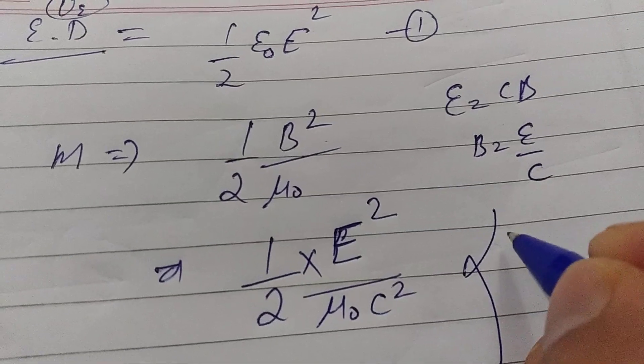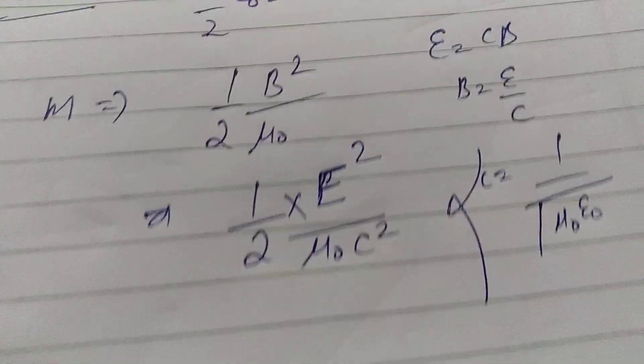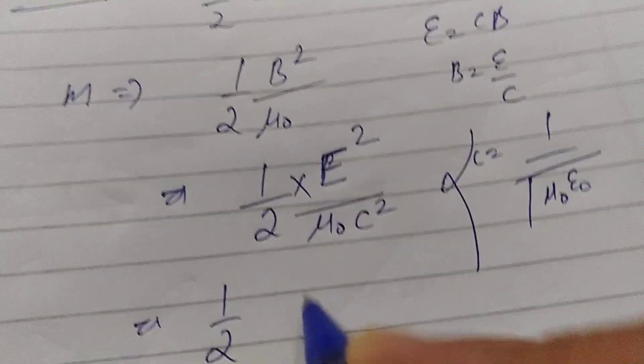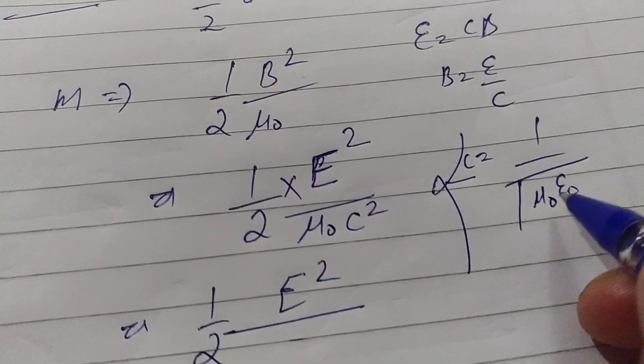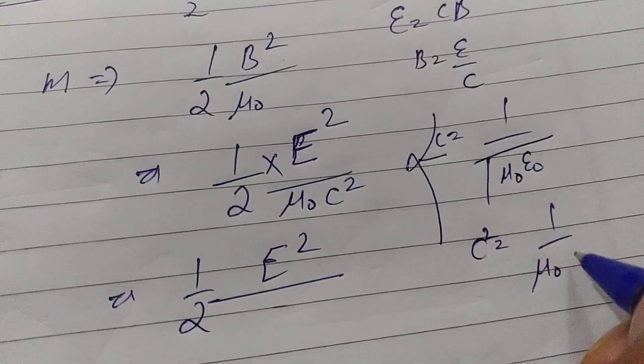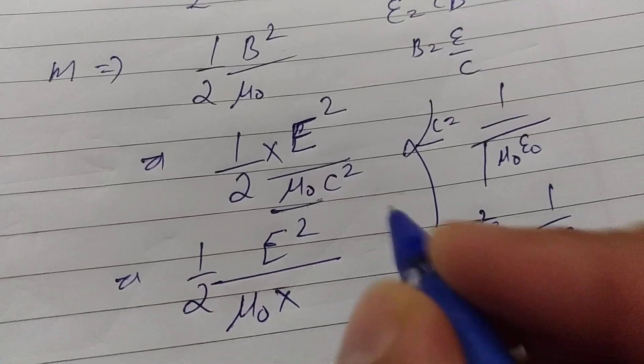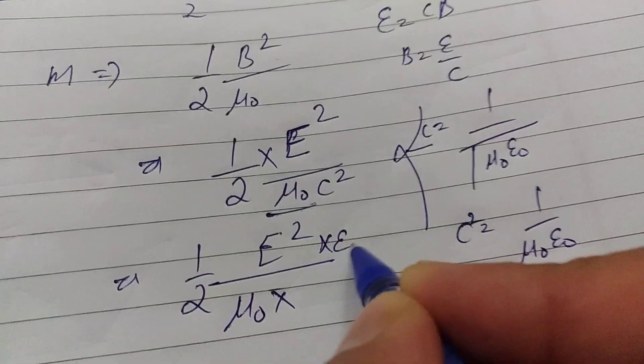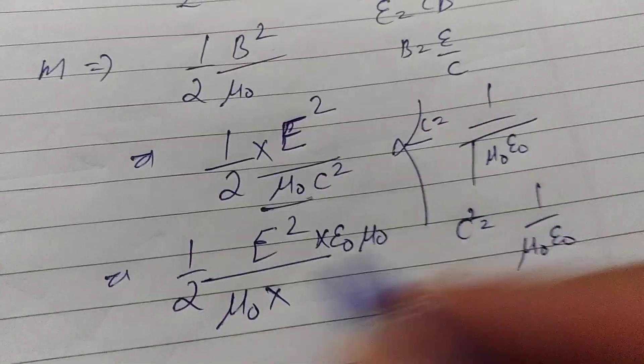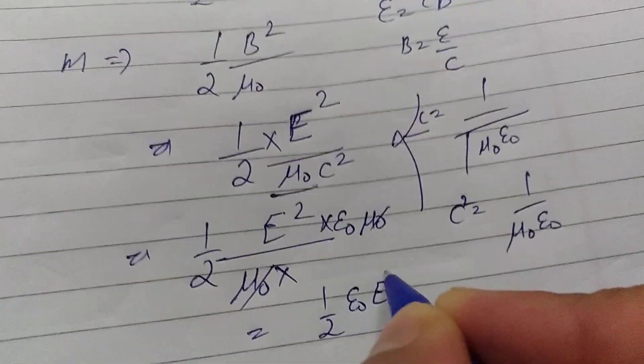And we also know that speed of light is equal to 1/√(μ₀ε₀). So you can write c² as 1/(μ₀ε₀). So here you have μ₀ and c² which is 1/(μ₀ε₀). So μ₀ will cancel from the denominator. So it becomes ½ε₀E².